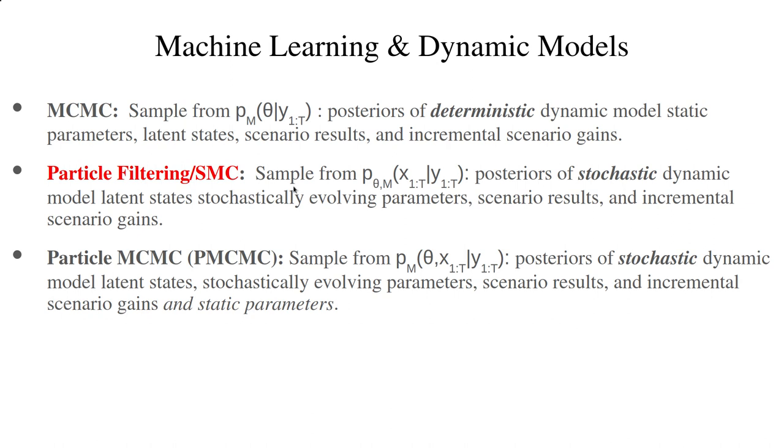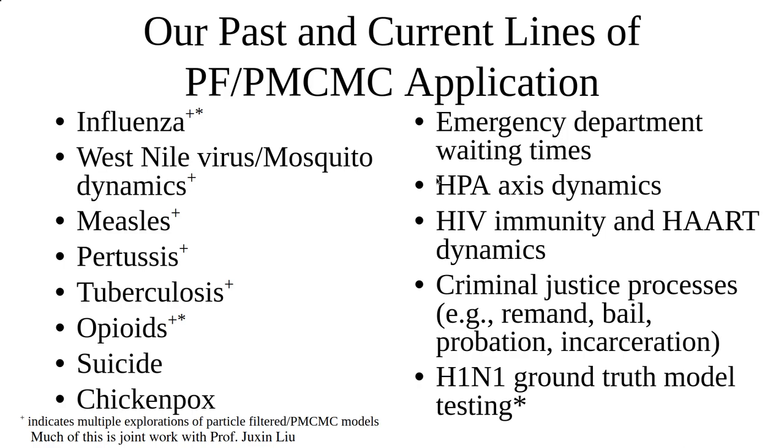And in the particle filtering context, what we're sampling from is given a set of parameter values and a given model, we're sampling from the full state of the system in light of observed data y. So the full state of the system over time, the trajectories within the system are things we sample from in light of the observed data. And as we see, we'll do so recursively. So we're computing the posteriors of these trajectories and these latent states in light of unfolding observations over time.